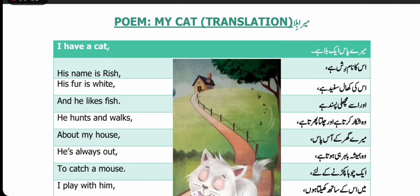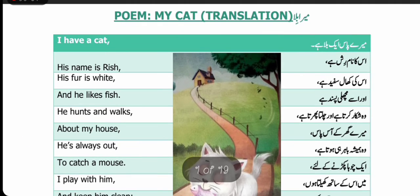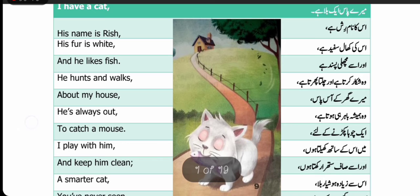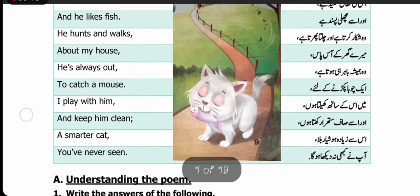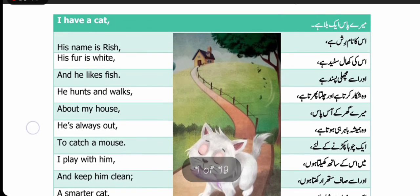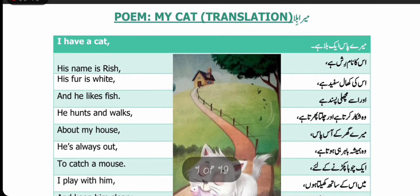Students, male استعمال ہوتا ہے آدمی کے لیے اور female استعمال ہوتا ہے عورت کے لیے۔ تو یہ ایک male cat یعنی بلہ ہے۔ سب کے گھر میں پالتو جانور ہوتے ہیں۔ جن کو ہم اپنے گھروں میں پالتے ہیں انہیں pets کہتے ہیں۔ Poet نے ایک pet پال رکھا ہے جو اس کا male pet یعنی بلہ ہے۔